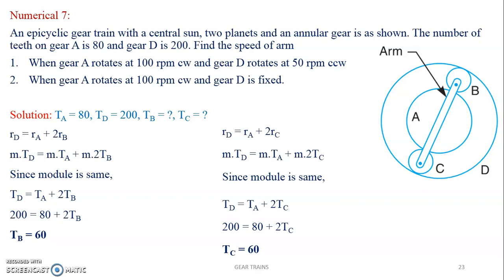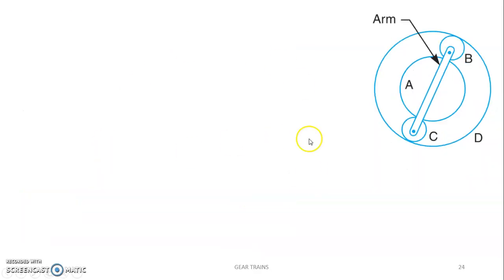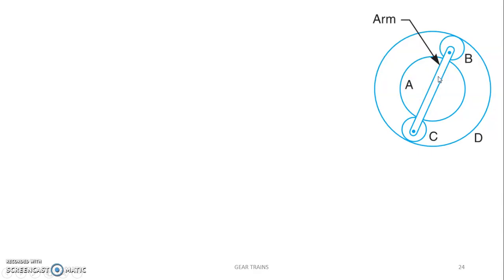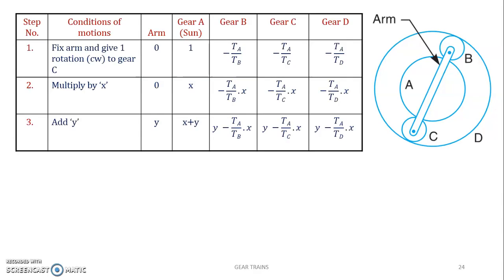Once the number of teeth is found, next we draw the tabular column. In the tabular column, the first column is the step number, second is the condition of revolutions or elements, third is always the arm, fourth is the central sun gear — gear A in this case — then the gears A drives: gears B, C, and then D. So there are four gears and also the arm.